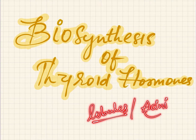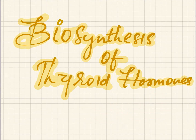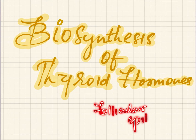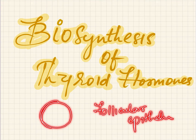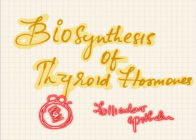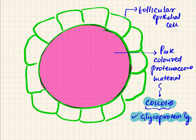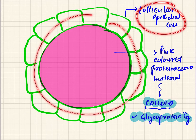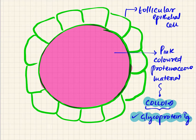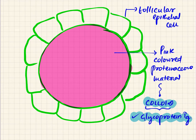Each acinus is lined by an epithelial layer called the follicular epithelium. Inside each lobule is an area called the colloid, which is surrounded and lined by the follicular epithelial cells. The pink-colored staining structure you can see in each lobule is the colloid, and this colloid contains a glycoprotein called thyroglobulin — represented here as TG.